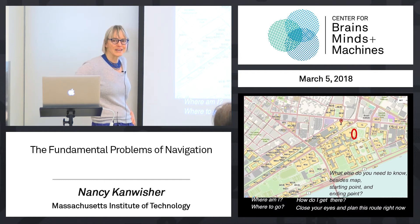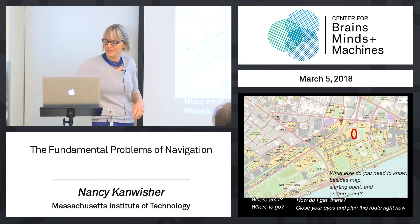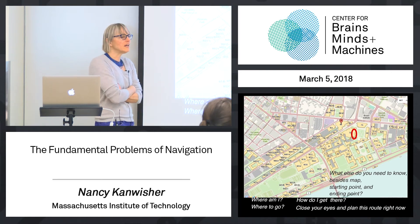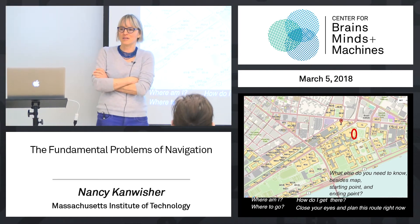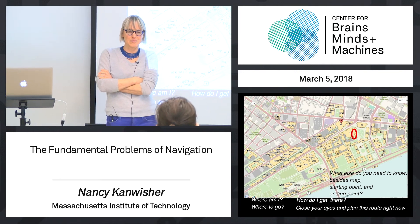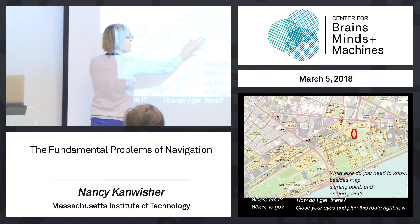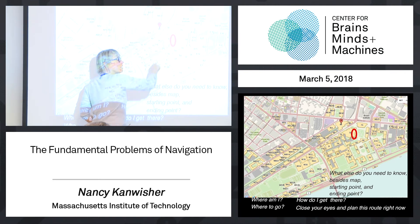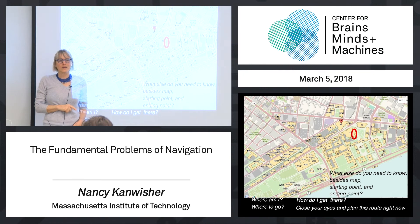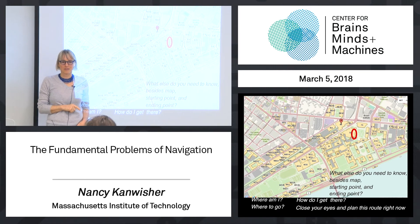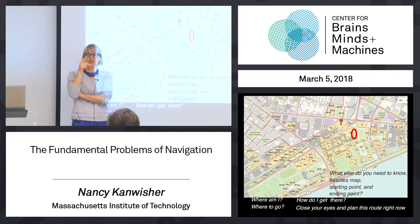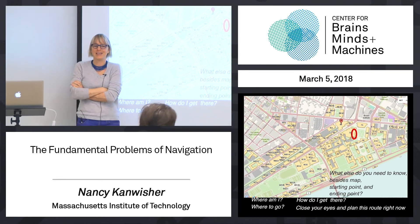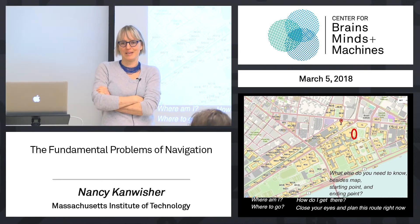Your next question would be: how do I get there from here? For that, a key piece of information you need — let's stop and think about this. Suppose you decided to go to the Stata cafeteria. You already have some kind of representation like this in your head; you know where you are in it and where your destination is. What else do you need to know to plan a route? Take a moment, plan a route, and think about all the kinds of information you need to take into account.